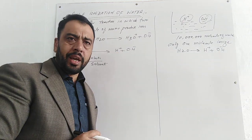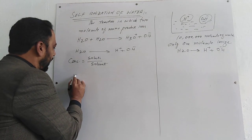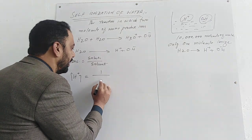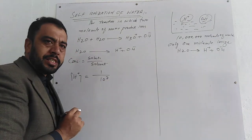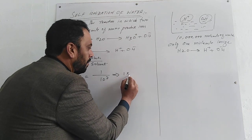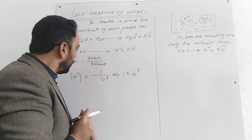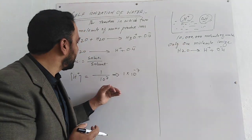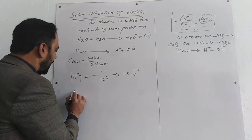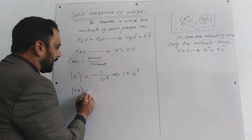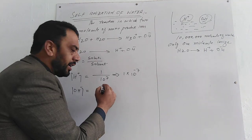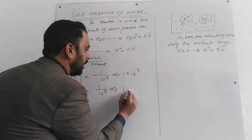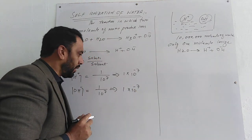Toh woh 1 H deta hai aur 1 OH deta hai. Agar main H ion concentration loon, toh yeh 10 million mein 1 ke barabar hai — 1 H ion aur 10 million. Yeh 10 power 7 ke barabar hai, ya is tarah bhi likh sakte hain: 1 multiplied by 10 power minus 7. Isi tarah OH ion concentration bhi 10 million mein se 1 hai — 1 multiplied by 10 power minus 7.